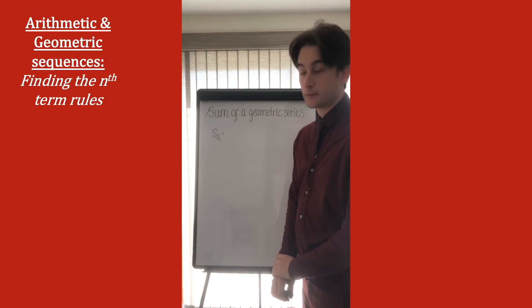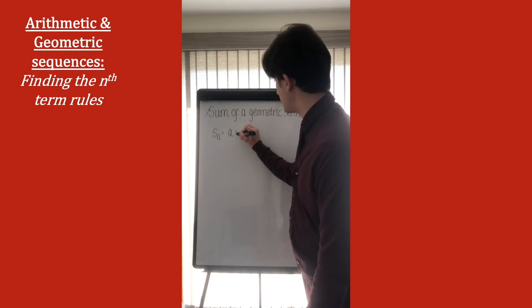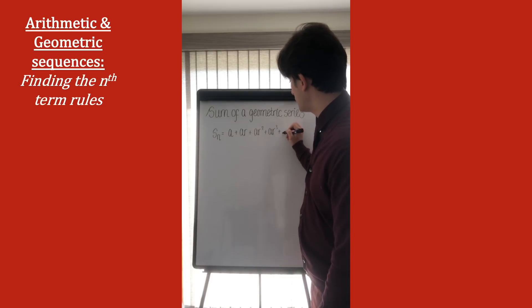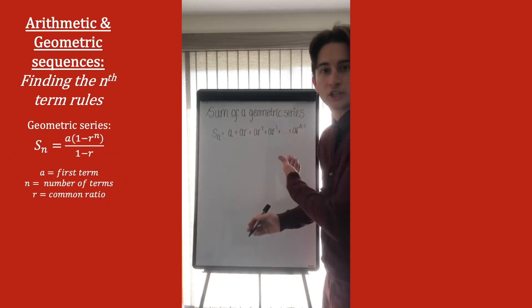So, writing the sum out in general terms, we have a, which is the first term, plus ar, which is a times the common ratio, ar squared, plus ar cubed, all the way up to ar to the n minus 1, which is the last term of the nth term.